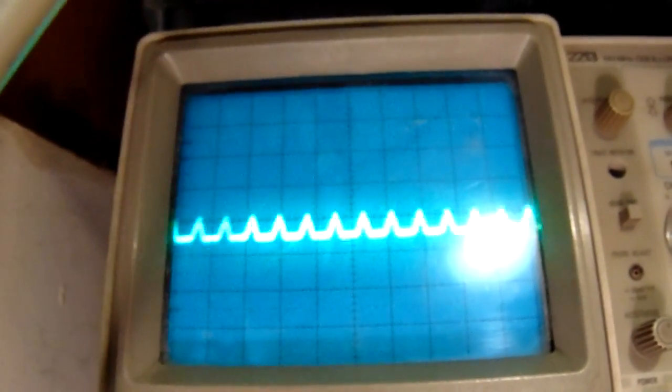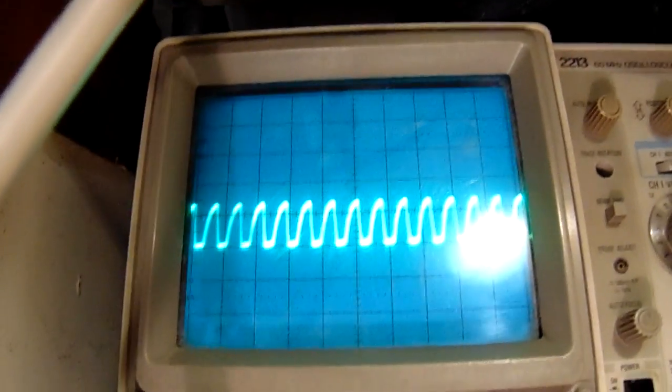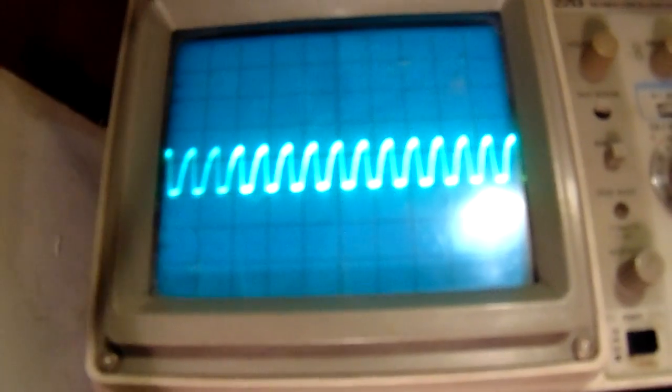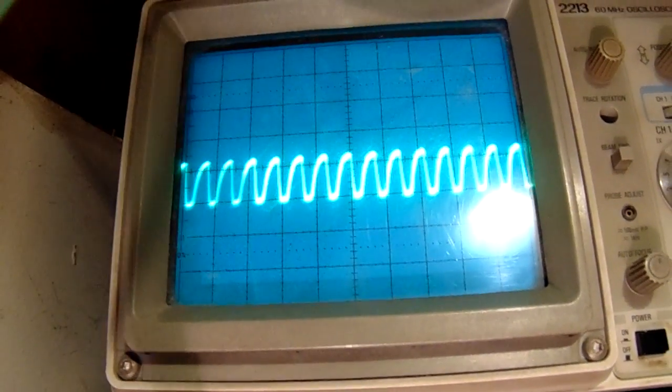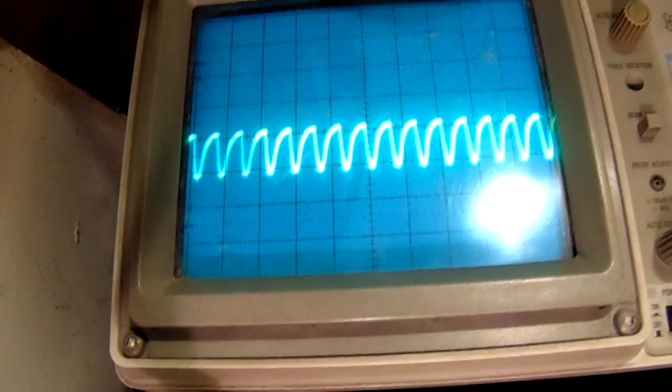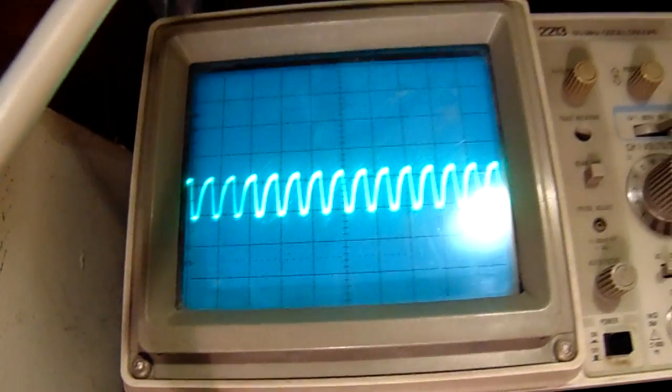So it works here. And now change the working point, that is the base potentiometer. And now change the value from the emitter potentiometer somewhat, and it oscillates.